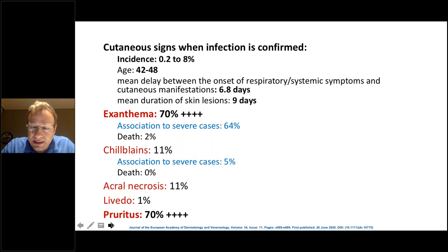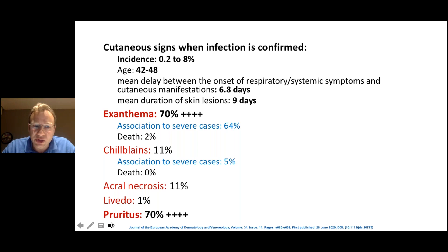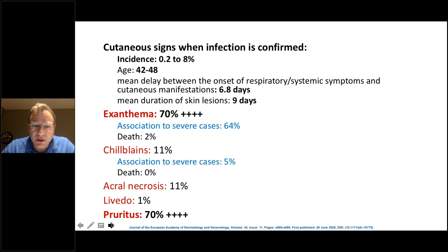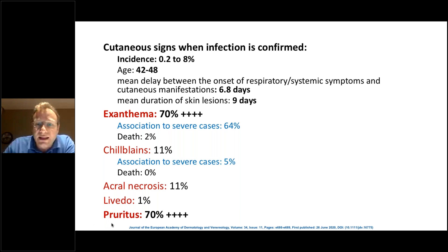An interesting finding in this publication was the classification of skin manifestations into five types: exanthema, chilblains or perniosis, acral necrosis, livedo, and urticaria with pruritus. By far the most frequent manifestations were exanthema and pruritus, around 70% of cases. Another important finding was the association to severe cases in 64% of patients having exanthema and only 5% of the patients having chilblains.